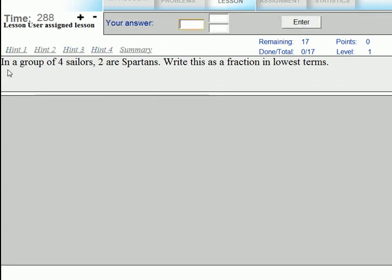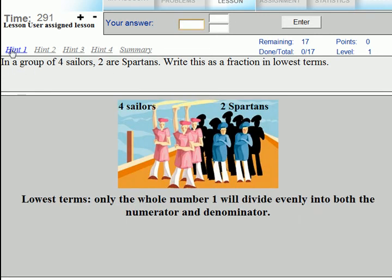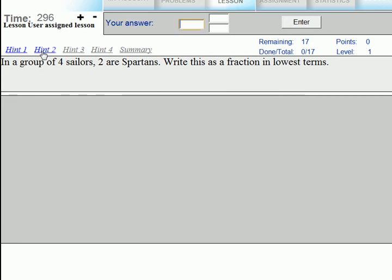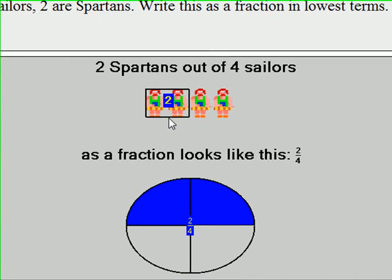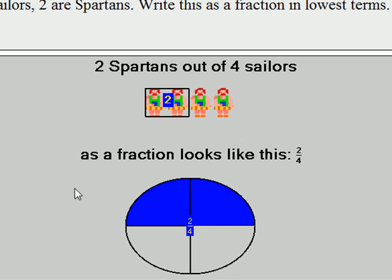When I repeat, I see 4 sailors with 2 of them Spartans. In hint 1, I see the same focus on the overall problem and the focus on key words. In hint 2, I see that I have only 2 Spartans out of 4 sailors with its visual representation in blue.